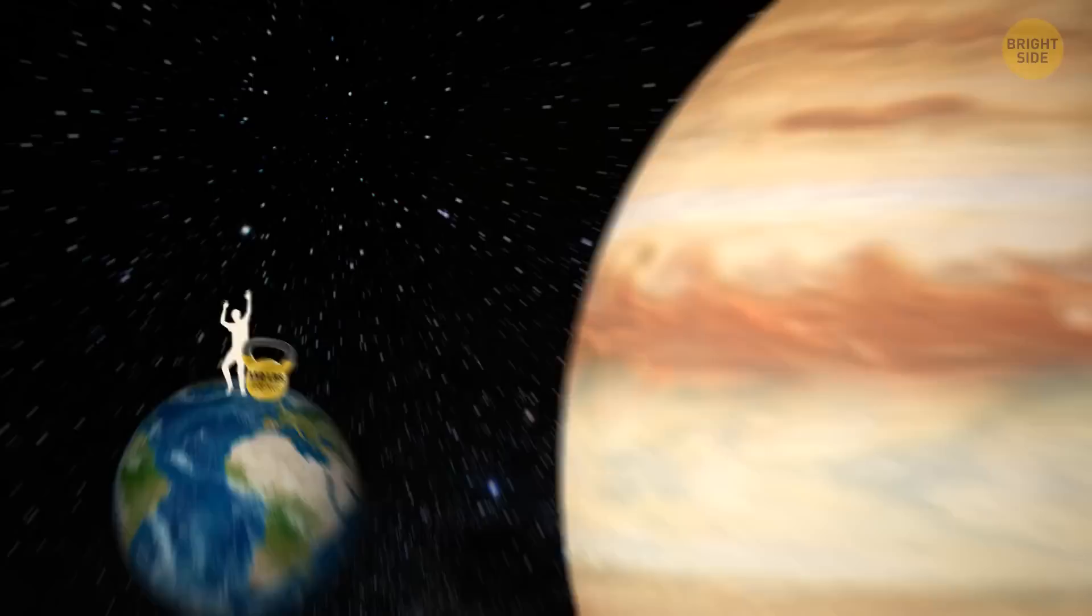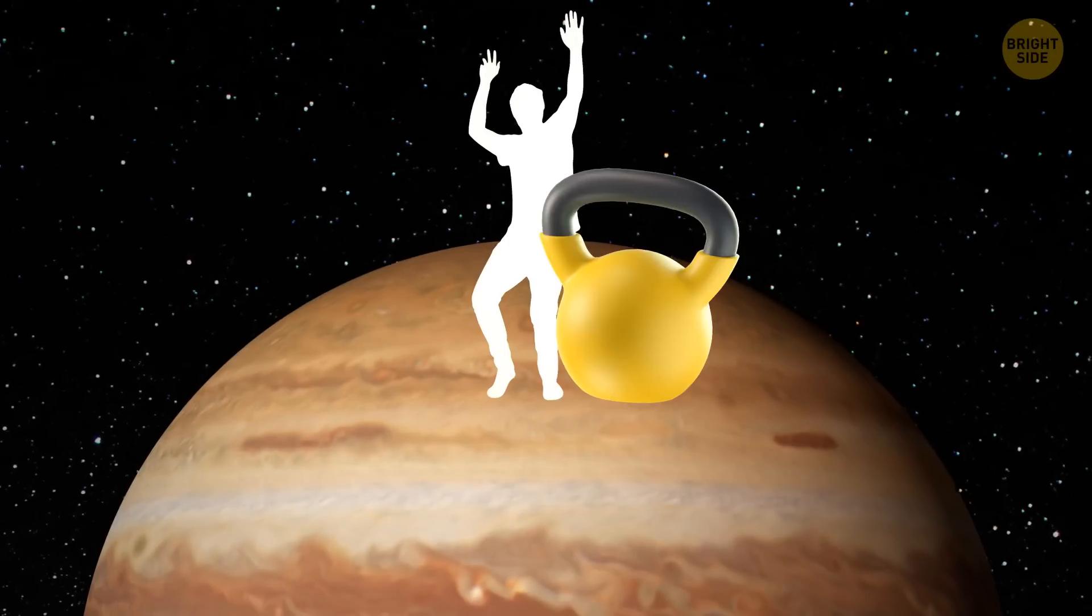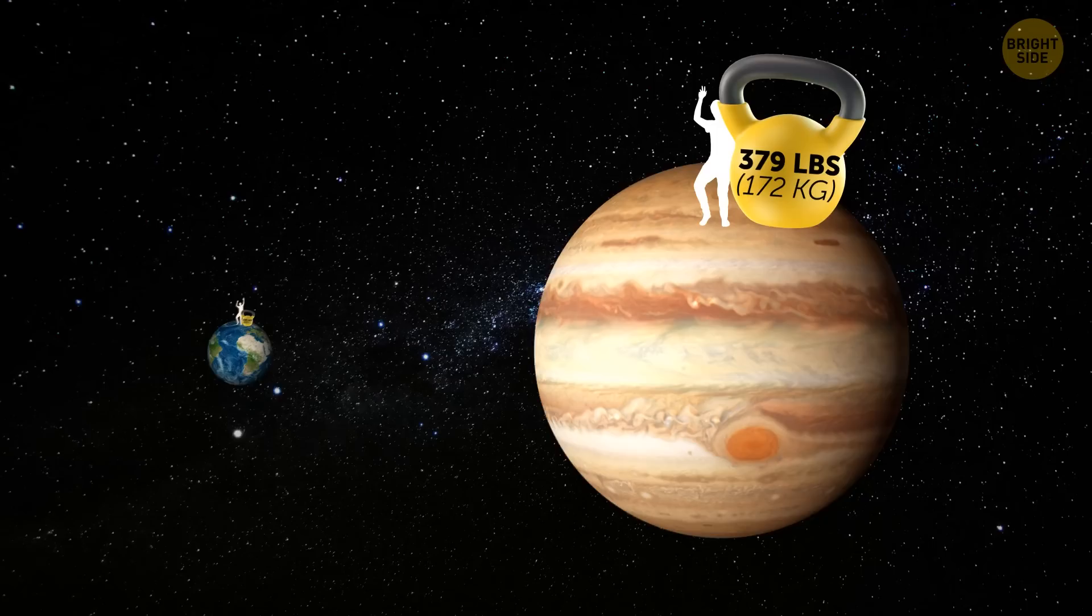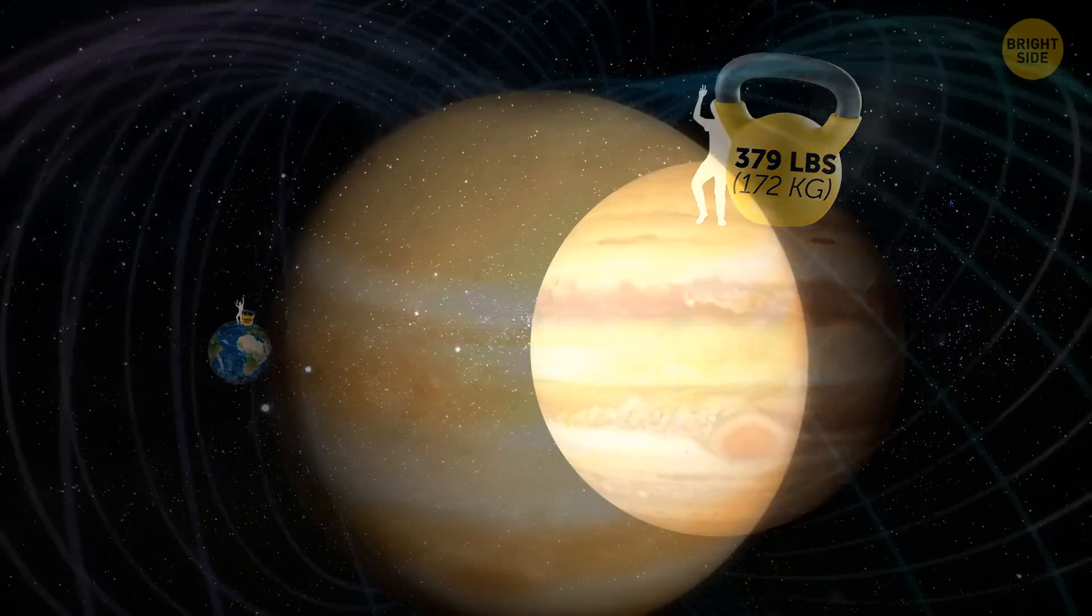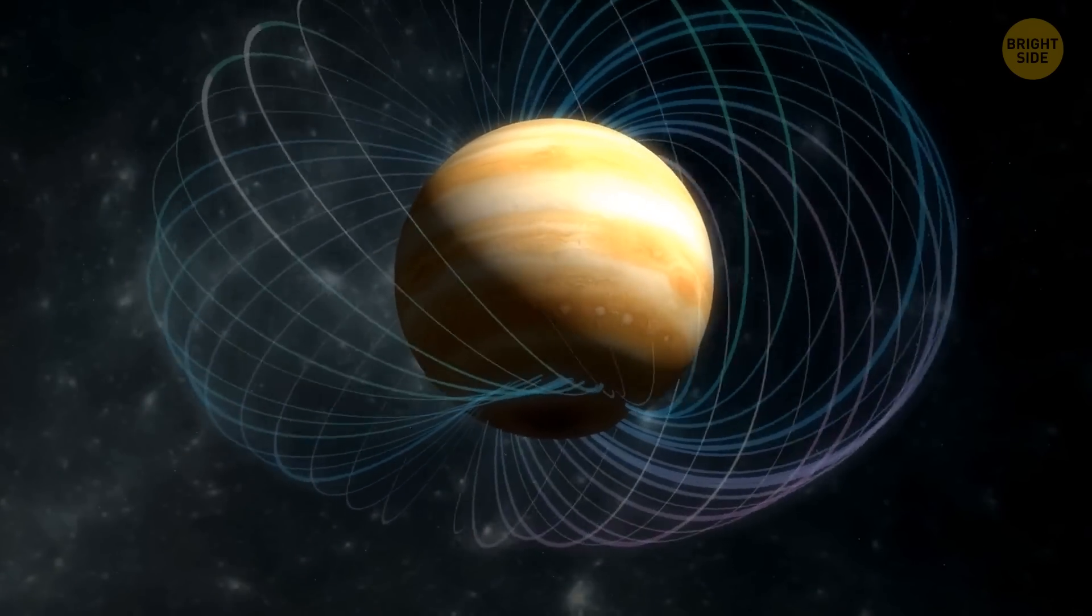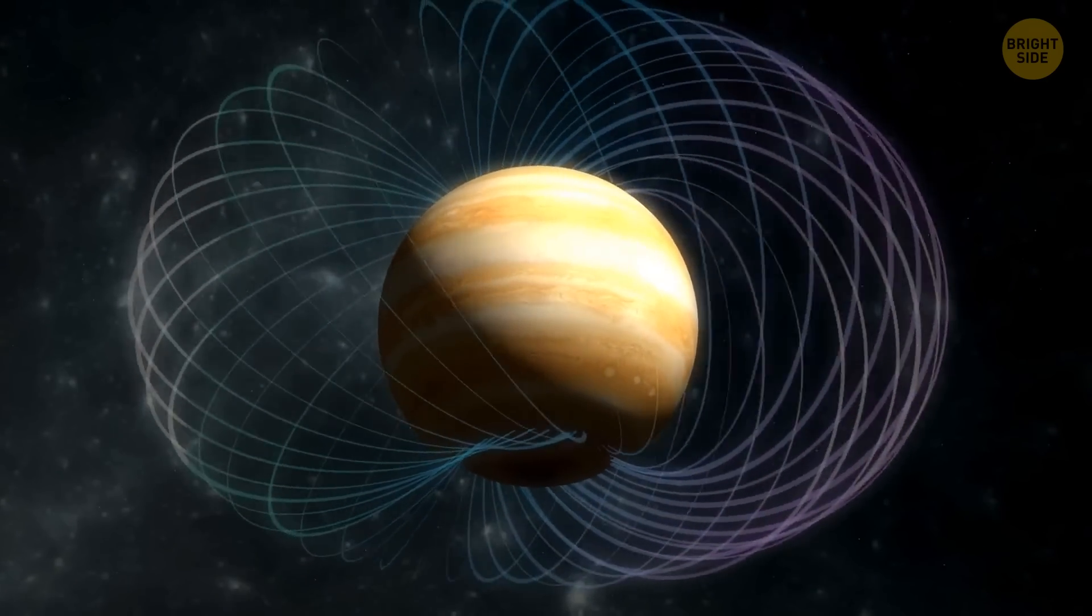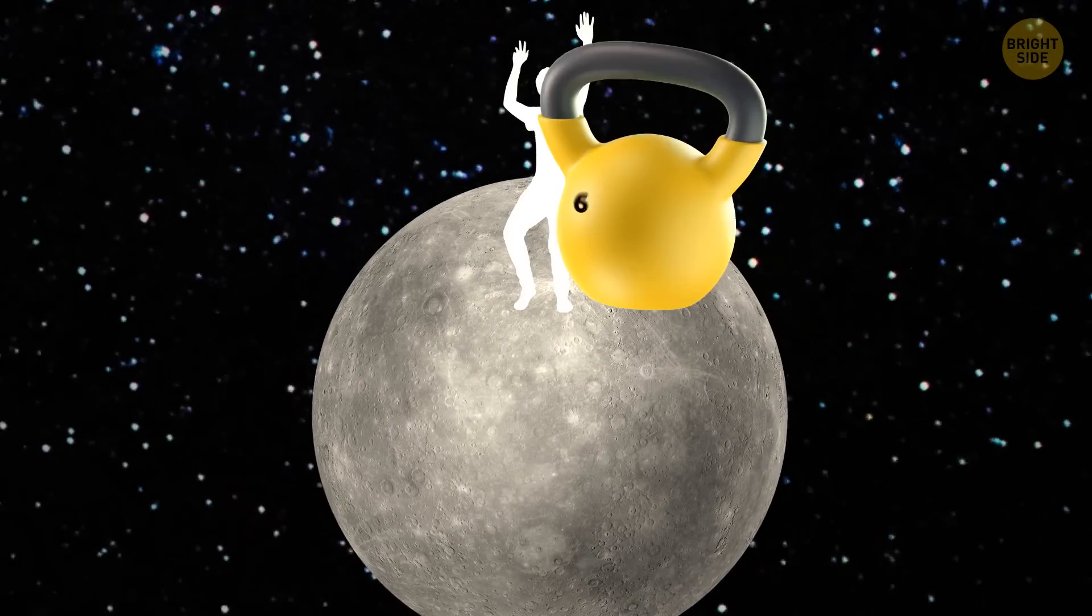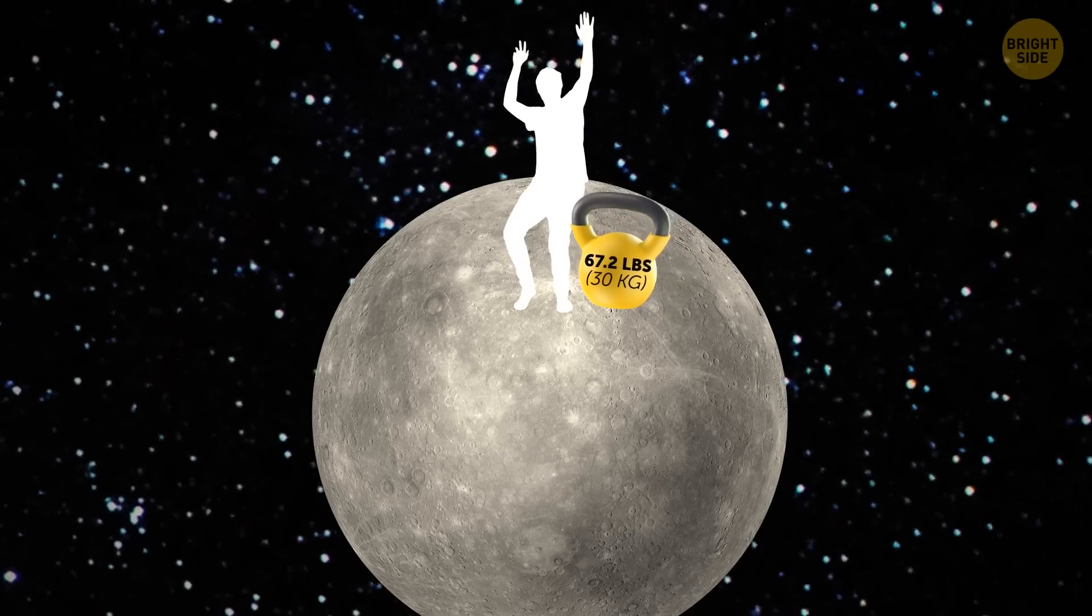But if you could teleport to Jupiter now, the same scale suddenly shows a whopping 379 pounds. No worries, it's not that you magically gained weight. It's just that Jupiter has a stronger gravity pull, which automatically makes you feel heavier. If you don't like the number there, you can go to Mercury. You'll only weigh 67.2 pounds there.